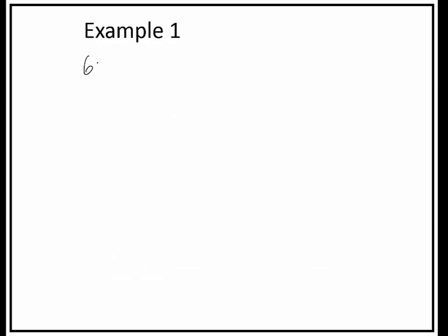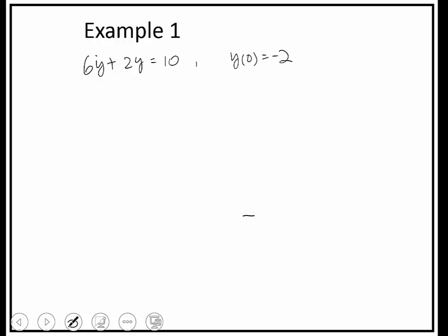Here's an example of a first order differential equation. The first thing I'm going to do is make sure it's in the standard form. The way we do that is make sure we divide the equation by the coefficient in front of the y term, so that the number in front of y is equal to 1. Here's my tau.